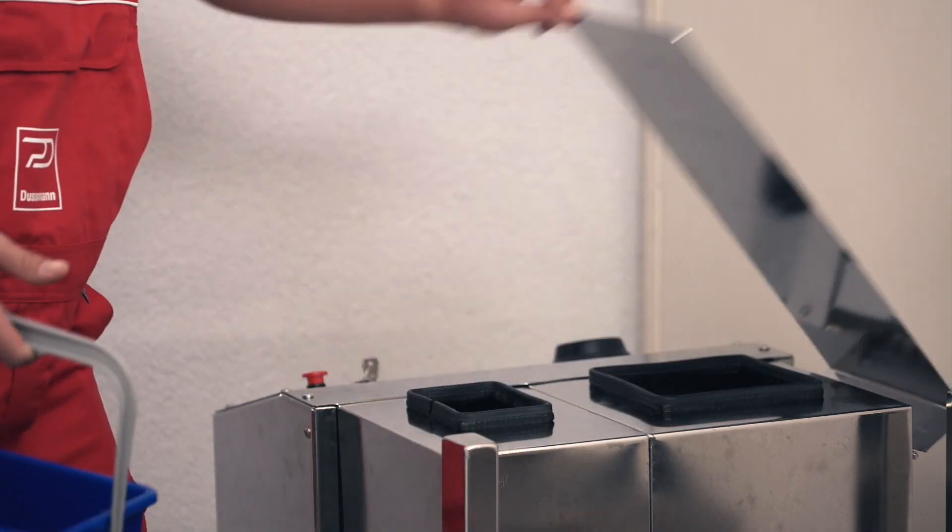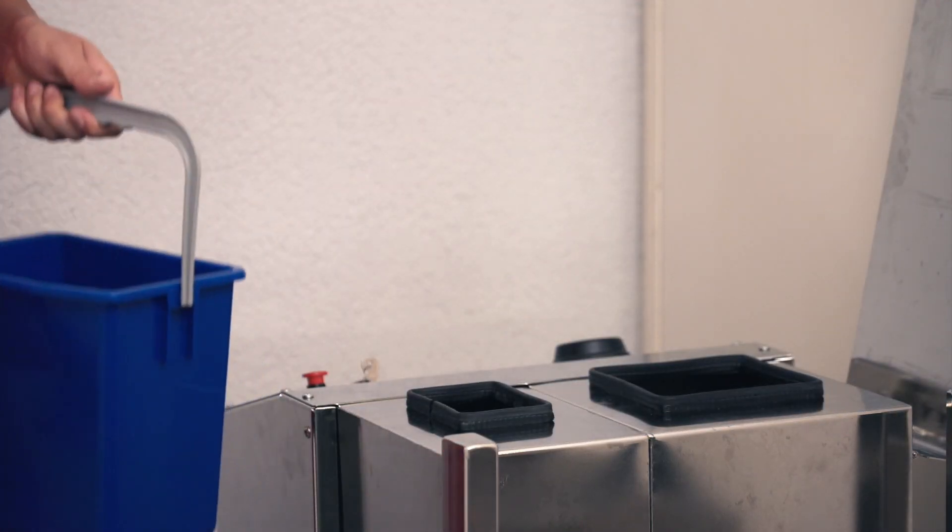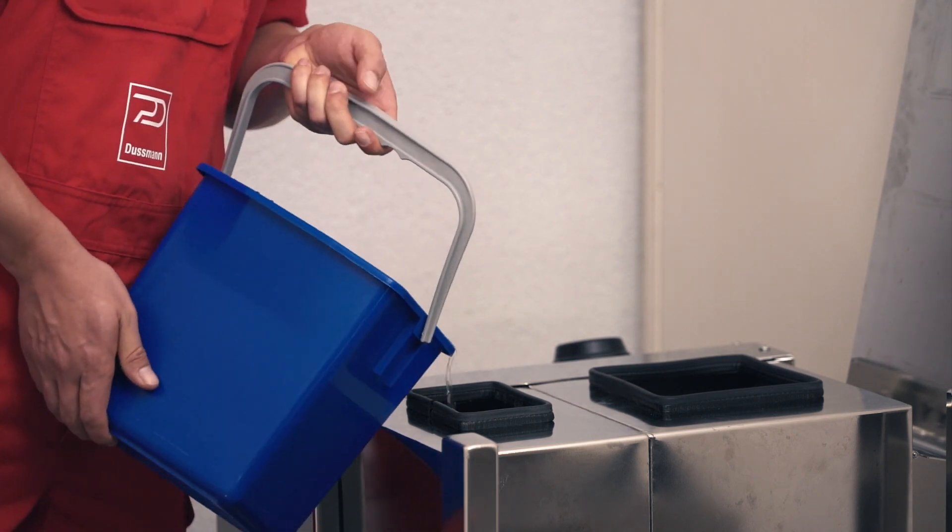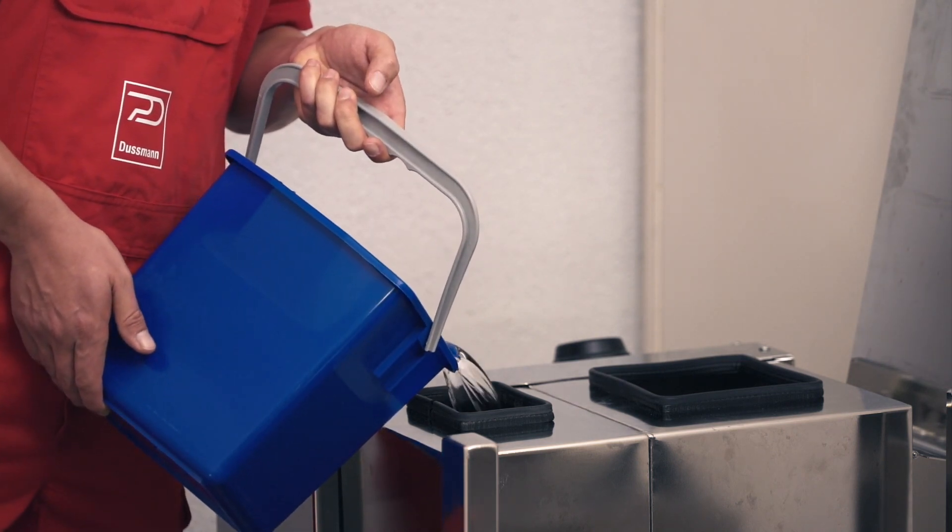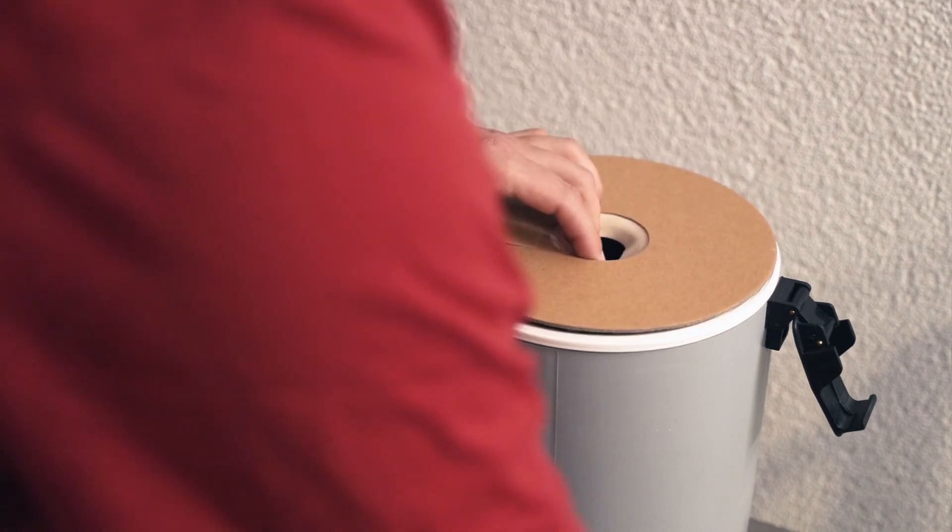At the start of work, the cleaner first prepares the robot. He fills the cleaning fluid for wet cleaning and changes the vacuum cleaner bag if required.